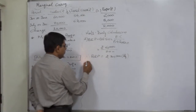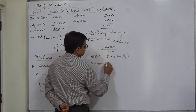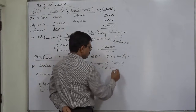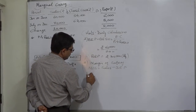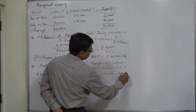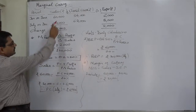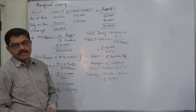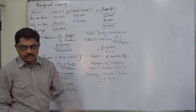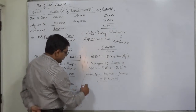Now we can calculate margin of safety for both halves separately. The formula is: margin of safety equals actual sales minus BEP. For the first half: 60,000 minus 30,000 equals rupees 30,000 margin of safety. We know that margin of safety is the only portion of sales which gives contribution in excess of fixed cost — that is, profit. 30,000 at 20% PV ratio gives profit of rupees 6,000 for the first half.